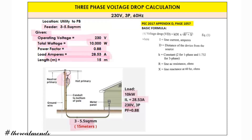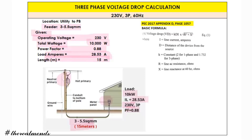The length expressed in meters is 15 meters, and the conductor is 3.5 square mm, located from the utility to the panel board or meter panel. If you're wondering why there is a power factor — for this example, we assume the 10 kilowatt load includes a combination of motors and compressors.